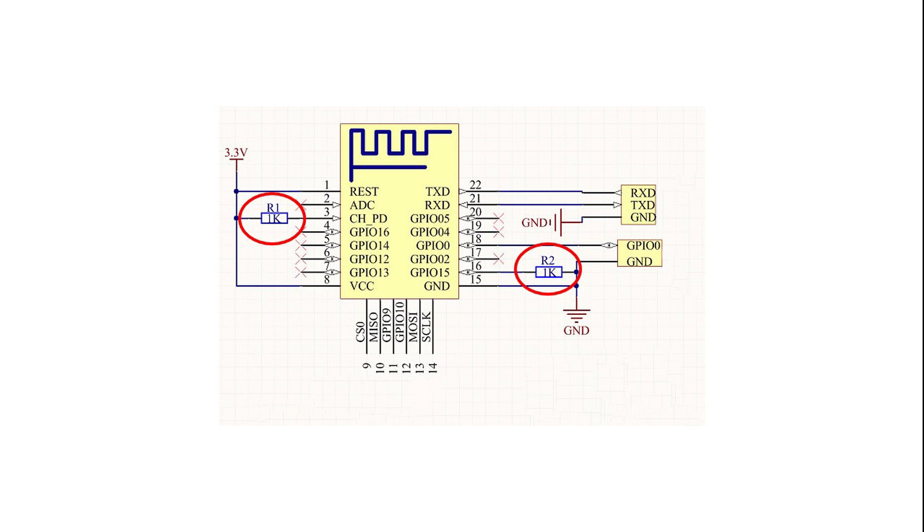And the second small thing, it would be good to include the mandatory pull up and down resistors directly on the board, and maybe even a small voltage regulator. But I'm not sure if this is possible with only two layers.